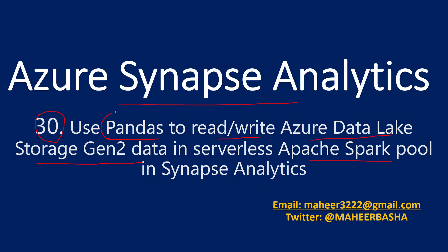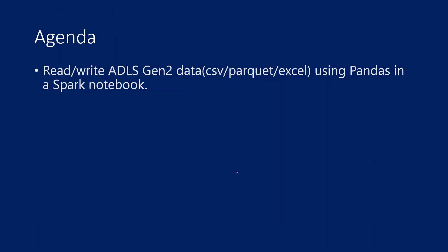Pandas is a module or library which has a set of classes and functions already created that will help you to read or write data from files. If those files are available on Data Lake Storage Gen2, we'll cover how to read and write them using Apache Spark Pool inside Synapse Analytics. We'll discuss three types of files: CSV, parquet, and Excel. I will practically show you for CSV and give hints for parquet and Excel files.